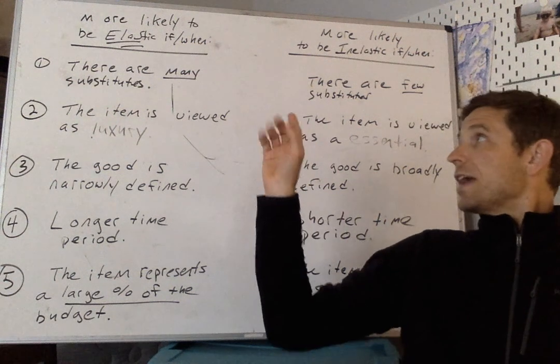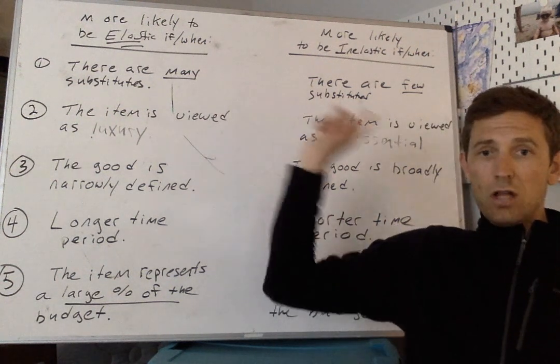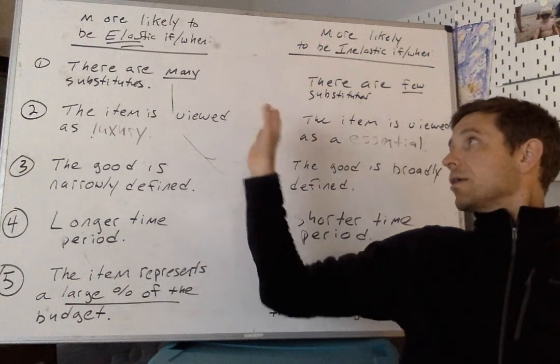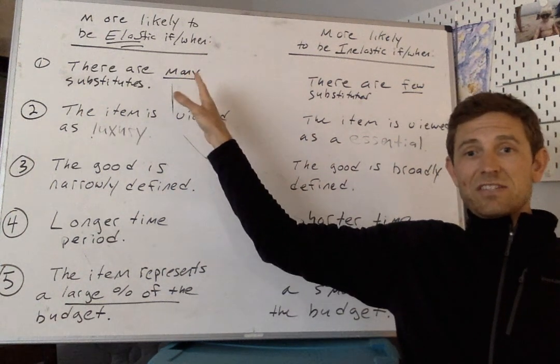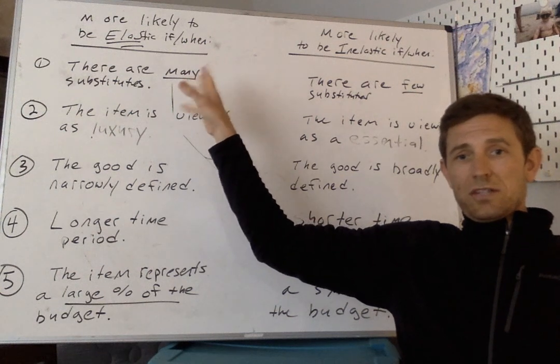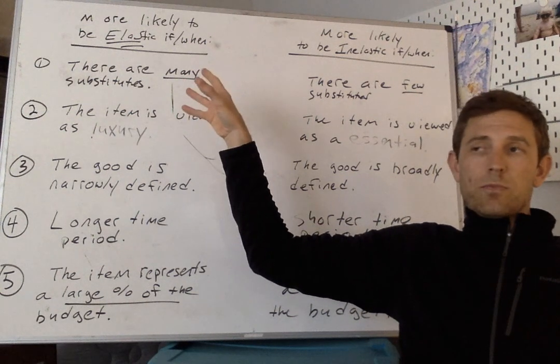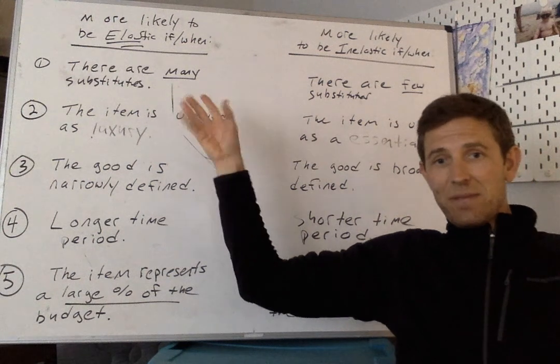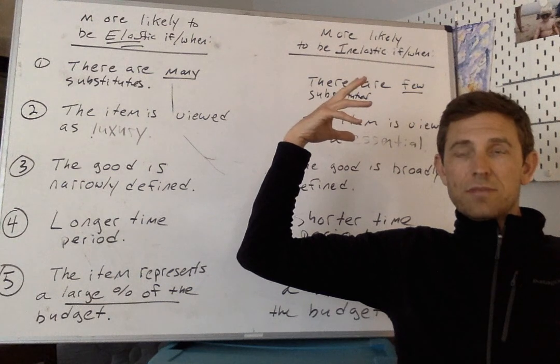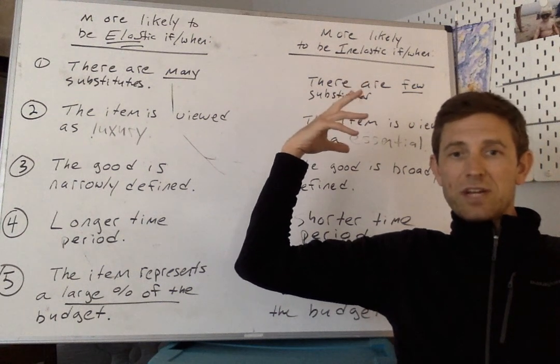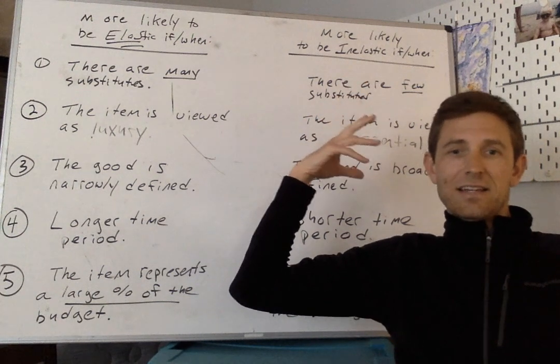Alright, so getting into it then across these two columns that I've got on the board behind me, are scenarios over here on this side where the existence of this scenario or this trait will mean that we're more likely to see elastic demand, and then over here if you see the opposite criteria, the opposite trait being demonstrated, it's more likely to be inelastic demand.